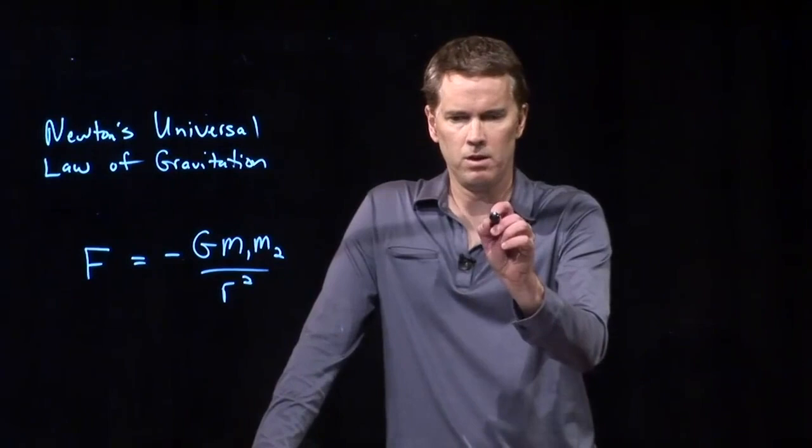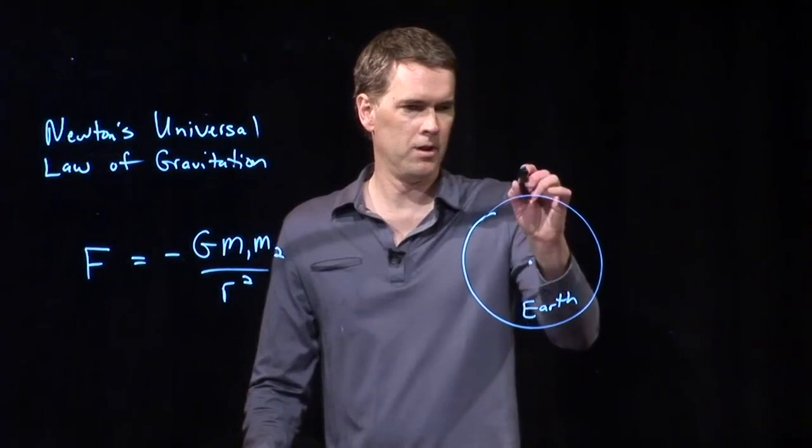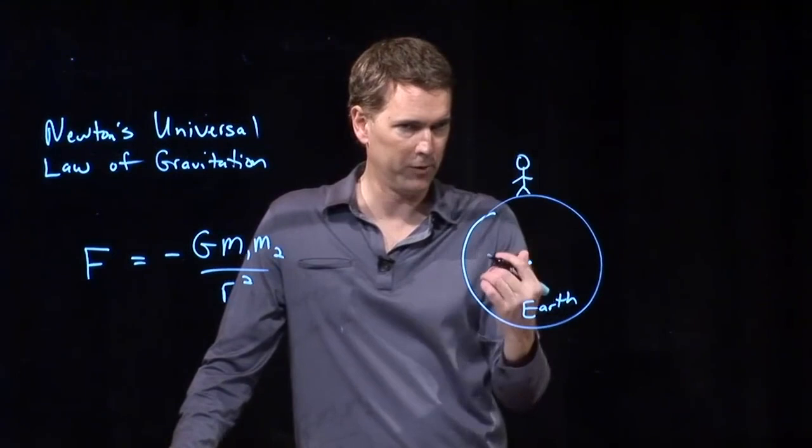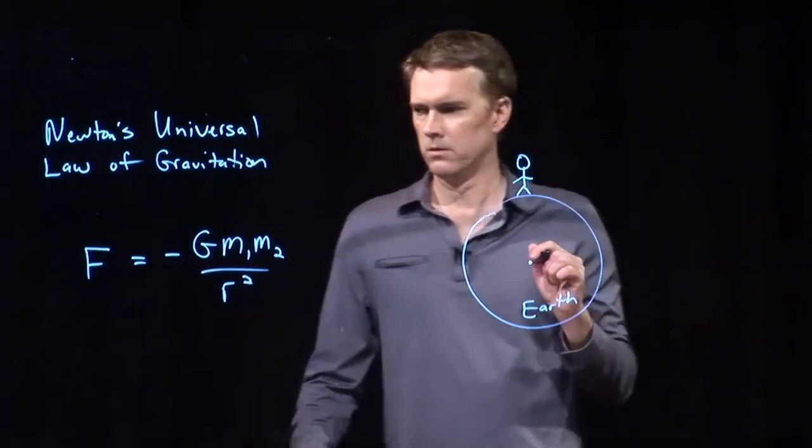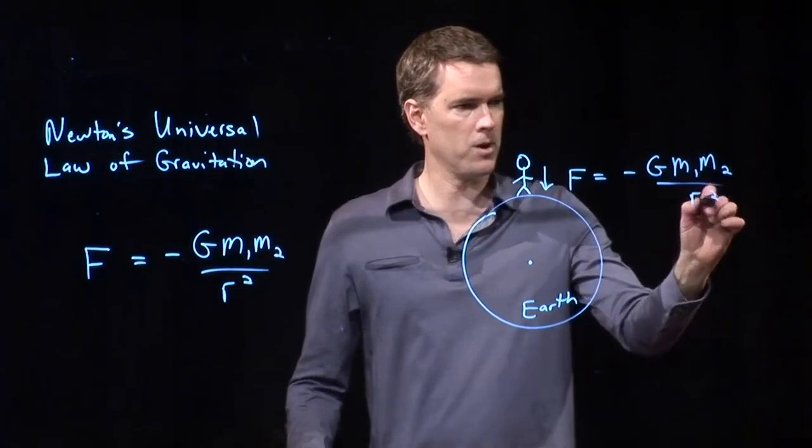Let's say I have a planet like the Earth, and now I look at the force of me on the Earth. What is the force of gravity due to where I'm standing? Well, it's this. The force, F, is negative G m1 m2 over r squared, where r is this distance right here.